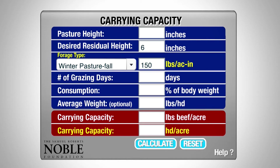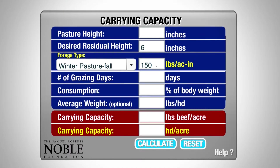We see that 150 pounds per acre inch is the default value that fills this field. You can manually change this if you determine your pasture is either better or worse than what you typically would expect. Now we'll use the values that Chuck collected out in the field, starting with pasture height — his average pasture height was 10 inches.